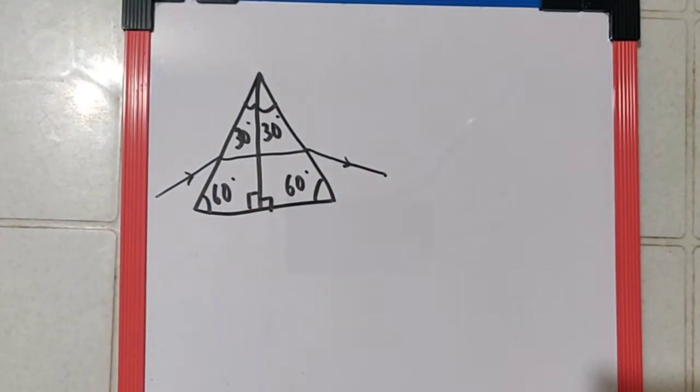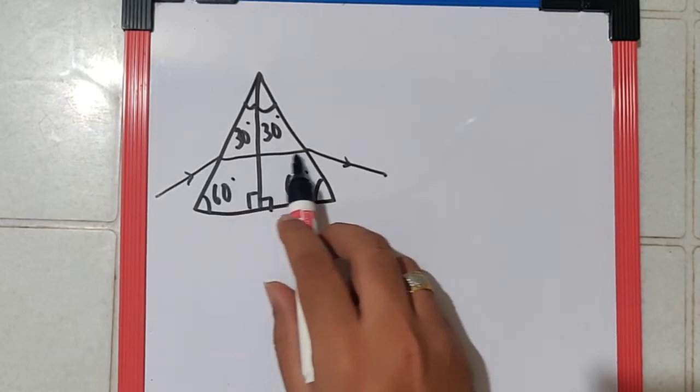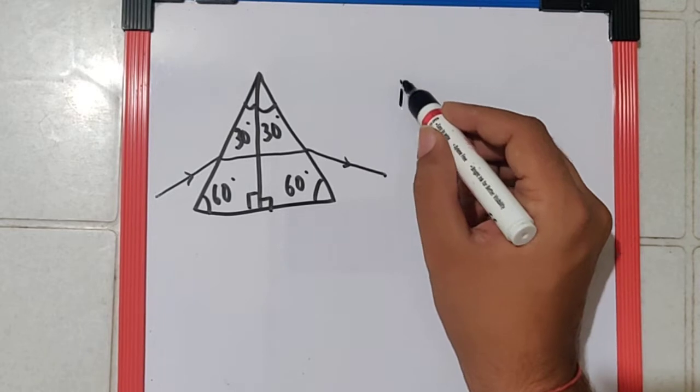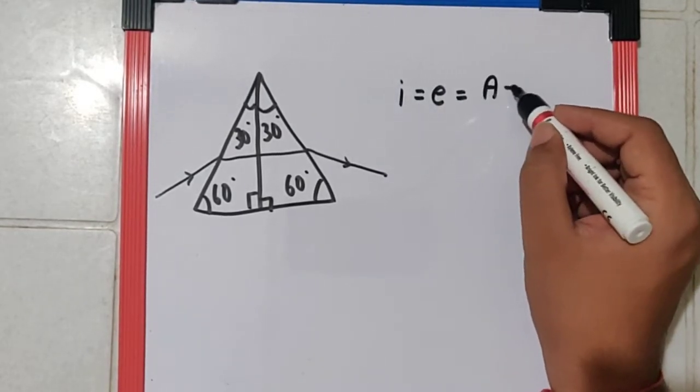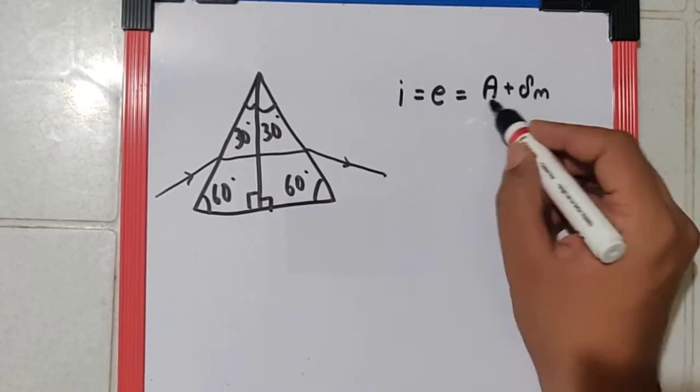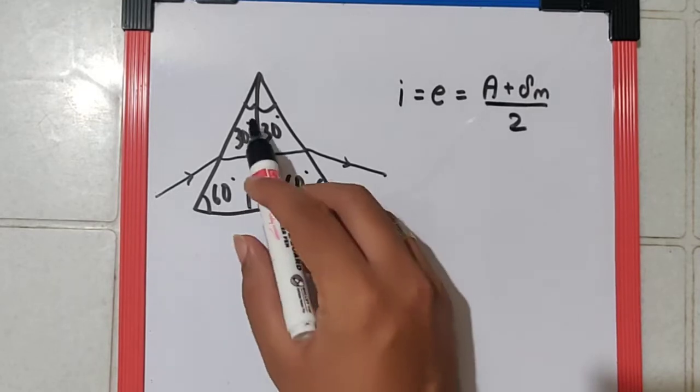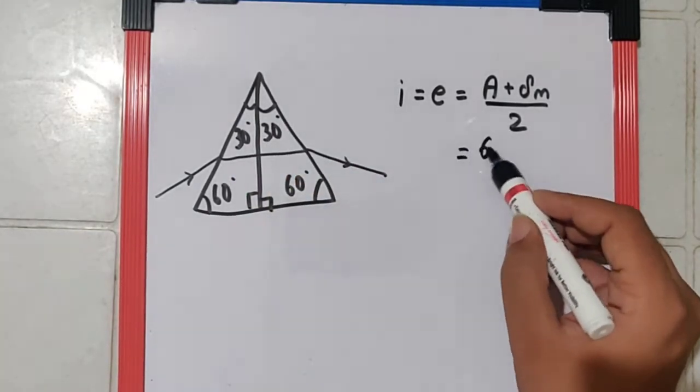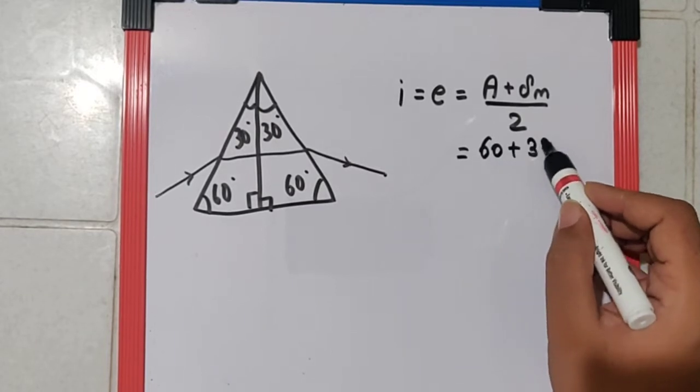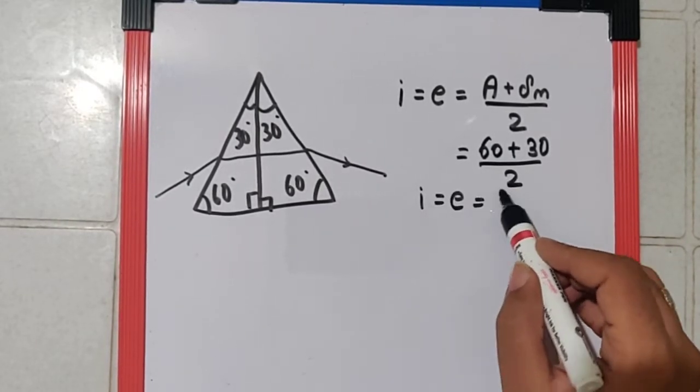So now here I can say that this is a case of minimum deviation for which I can say I equals E, and that equals (A + δm)/2. Now if we consider this as one single prism, the angle of prism becomes 60 degrees. So if we substitute that, this is 60, the deviation is 30 divided by 2, we get I equals E equals 45 degrees.